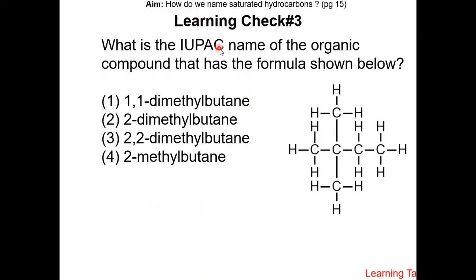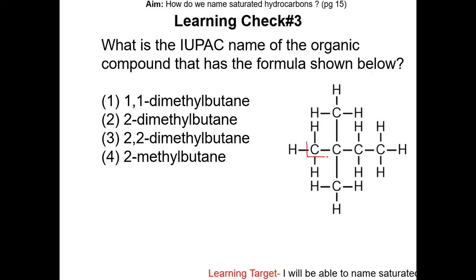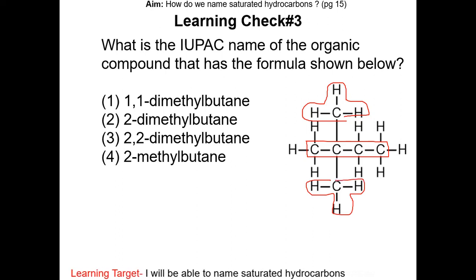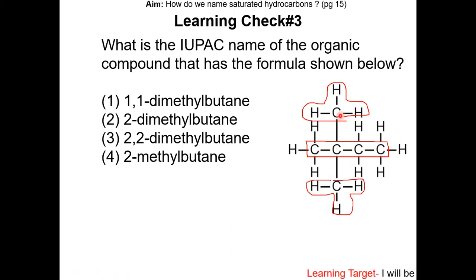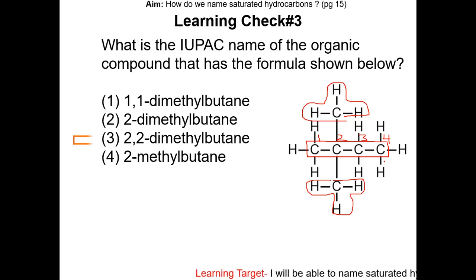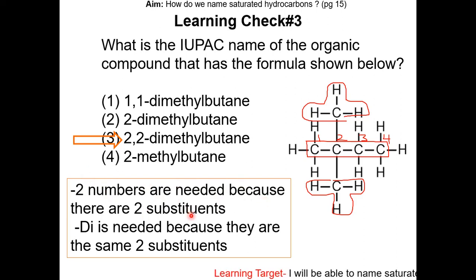Learning check number 3: what is the IUPAC name of the organic compound with the formula shown below? The first step is to identify the parent chain, which is 4 carbons long — butane. The next step is to identify the substituents; there are two of them, so we need two numbers. Both substituents are methyl groups, so we need the covalent prefix di. Number the carbons to give the lowest numbers possible — both methyl groups will be on carbon 2. So the name of this molecule is 2,2-dimethylbutane, choice 3. Two numbers are needed because there are two substituents, and the prefix di is needed because they are the same substituent.